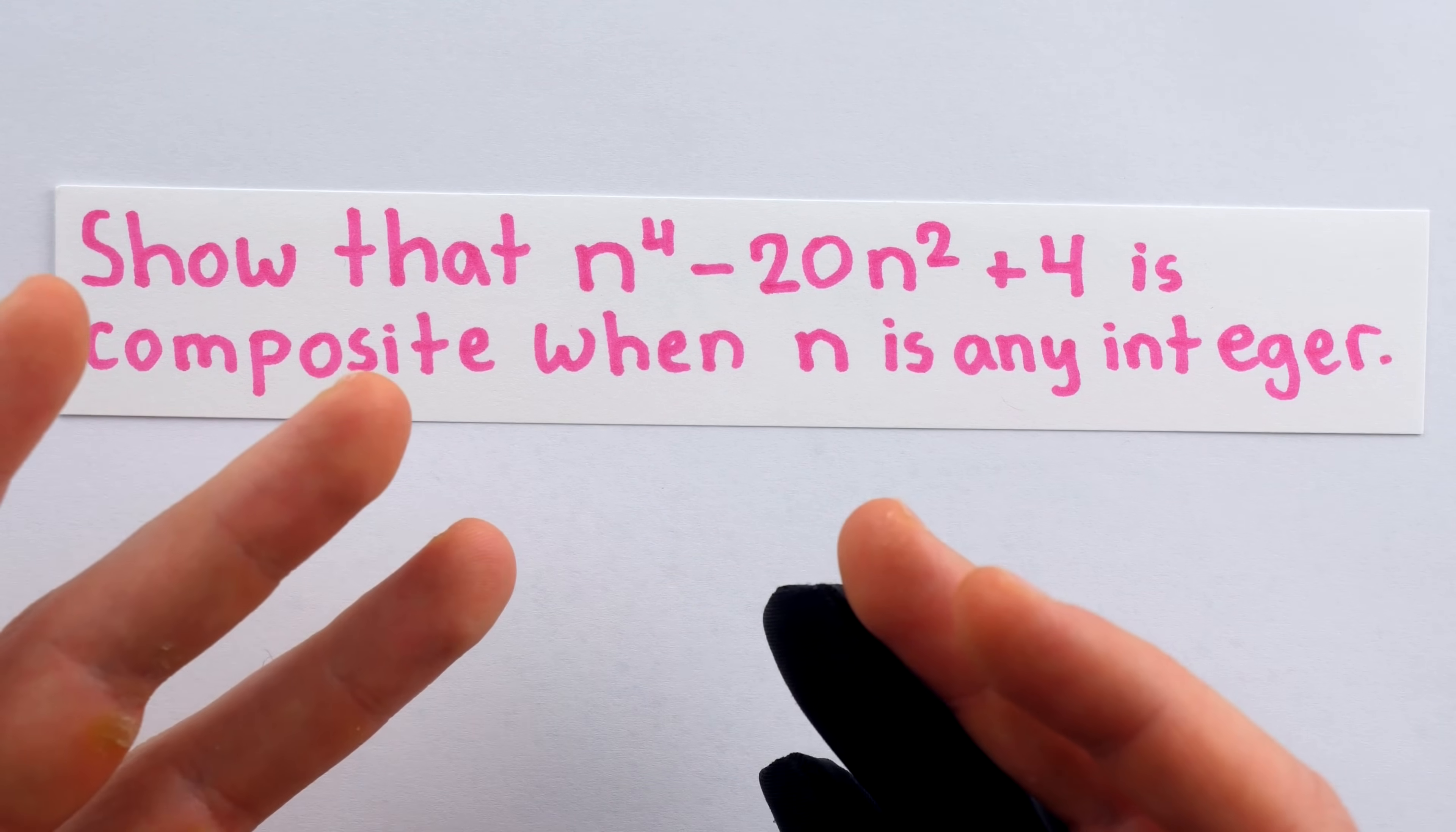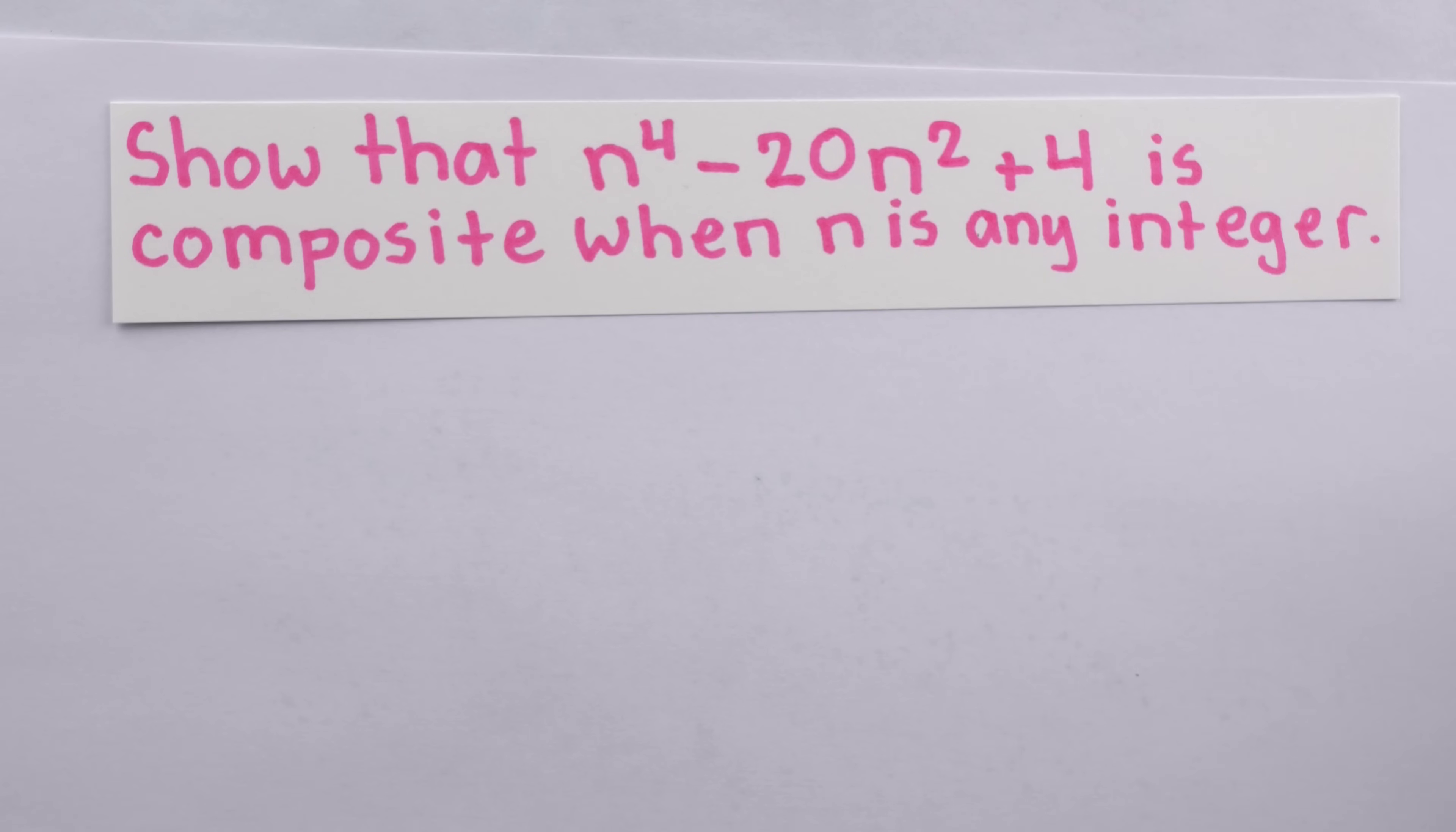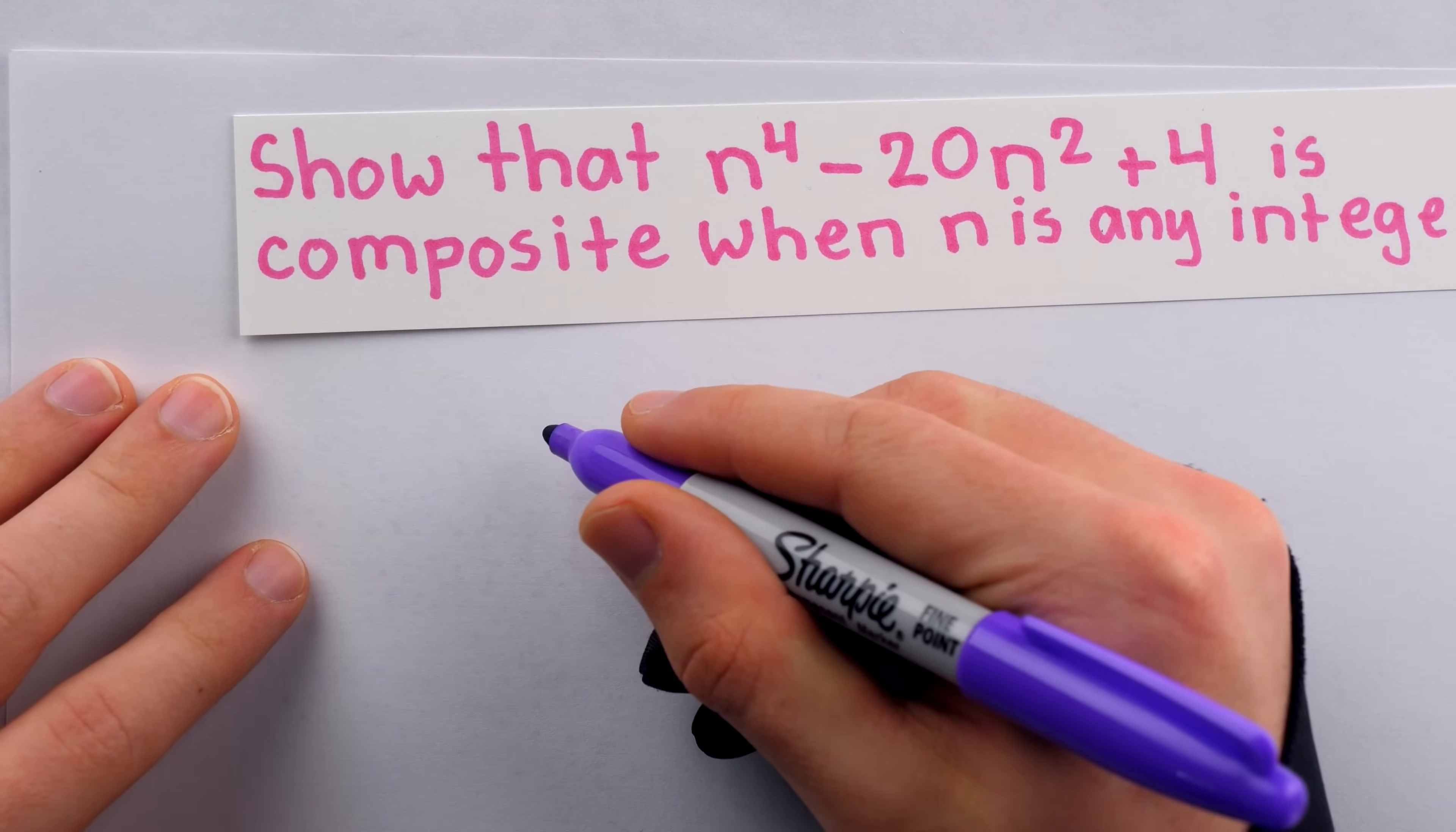Imagine that. While some other polynomials will generate a bunch of prime numbers for integer inputs, this one only ever outputs composites. Of course, coming up with a polynomial that only gives composite outputs for integer inputs is not a difficult thing to do.